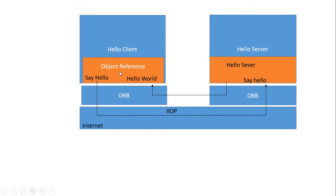In CORBA, the IDL client acts as the stub and the skeleton of the server resides on the server side. There is object implementation running on the server side. To access it, the client first goes to the ORB interface, then through IIOP (the Internet Inter-ORB Protocol, essentially the TCP/IP layer), to reach the server.